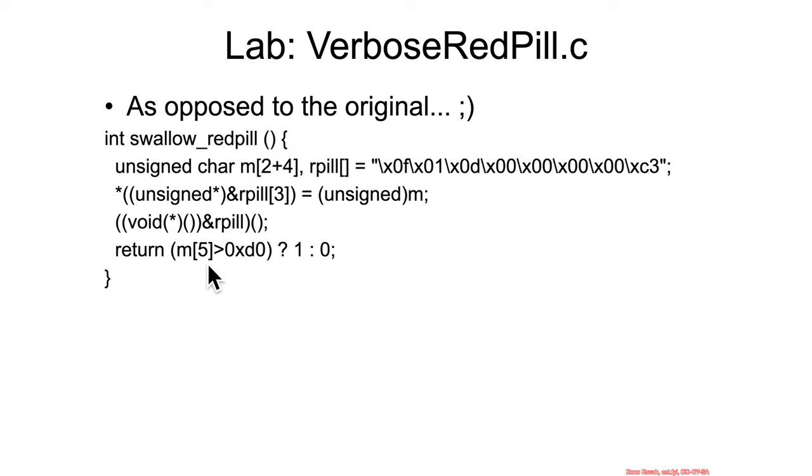She invokes rpill as if it's a function pointer, so effectively just calling the SIDT instruction. Then she checks the output of it, asking whether the most significant byte is 0xD0 — if so, she concludes that she's inside a VM.